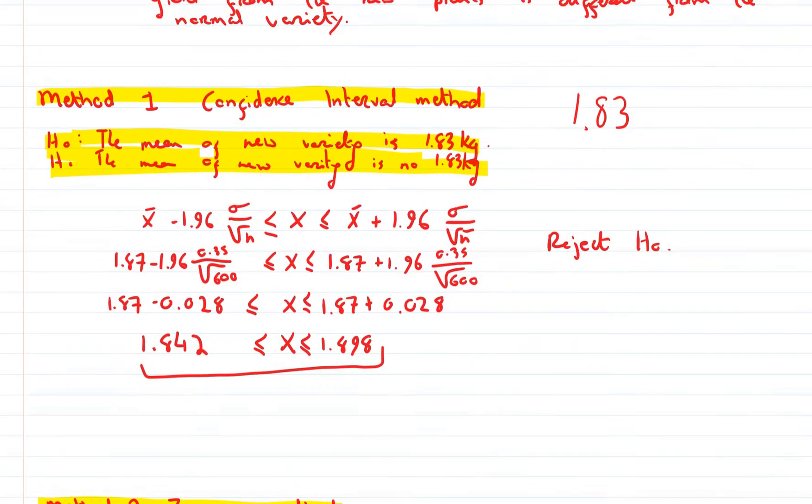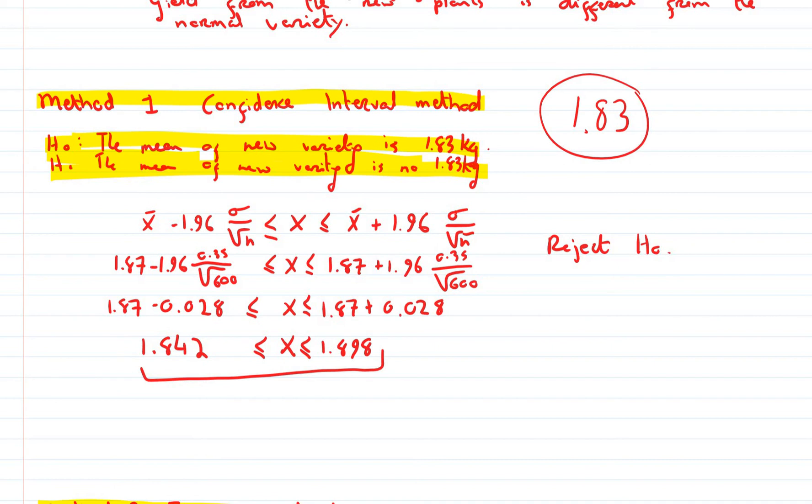Likewise up here, if this 1.83 was, say, 1.85, well then it would lie within this confidence interval. So we could accept the null hypothesis.